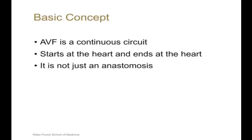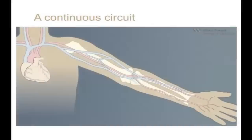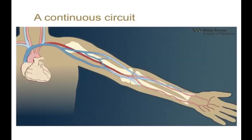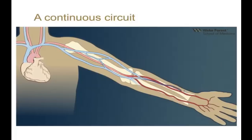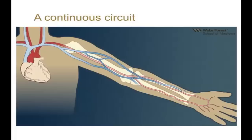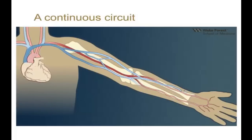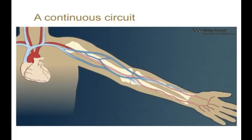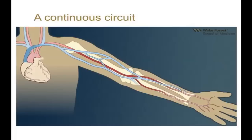Arteriovenous access is a continuous conduit. One should think of an arteriovenous fistula as a circuit that starts at the heart and ends at the heart — it is not just an anastomosis between an artery and a vein. As shown in this animation, with each heartbeat, blood is pumped from the heart into the arterial system of the extremity, travels across the arteriovenous fistula — in this case the radiocephalic fistula at the wrist — into the venous system and returns to the heart. It is important to recognize that for an AV fistula to function properly, all three components are necessary: adequate sized vessels, a good anastomosis, and a good pump.